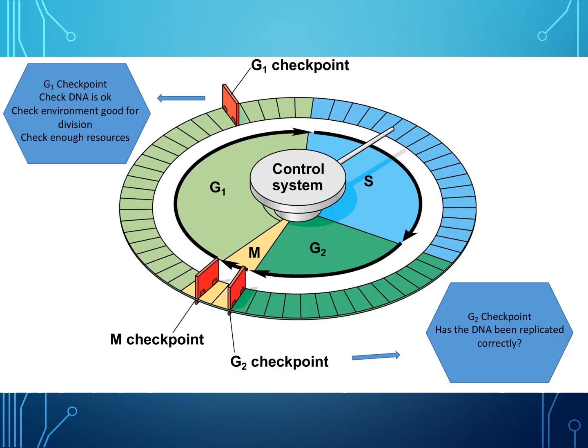Looking at the checkpoint diagram again: the G2 checkpoint checks whether DNA has been replicated correctly. The G1 checkpoint checks that DNA is okay, that the environment is good for division, and that there are enough resources.